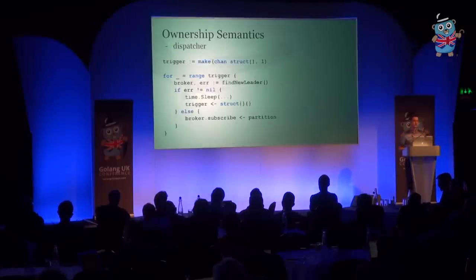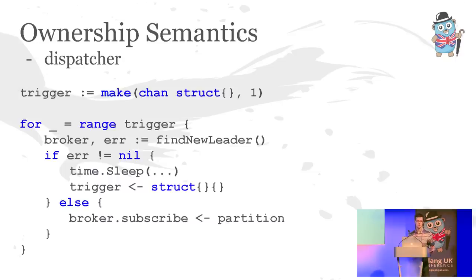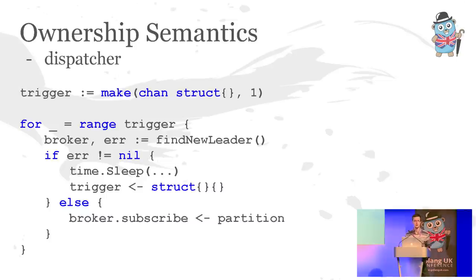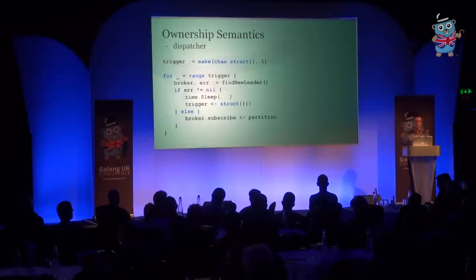The dispatcher code looks basically like this. It has a trigger channel for receiving its ownership token. When it receives the token, it finds the new broker leader. If it finds one successfully, it simply sends its ownership token on and it's done. However, if there's an error, it backs off — it doesn't want to flood the cluster with useless requests. So it will sleep for a while and then simply send itself the ownership token, which is a really clever and simple way of continuing this loop. The channel we're listening on has a buffer of one for this purpose. It'll retry as many times as it needs in order to find a successful new leader and then send its ownership token there.